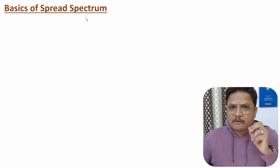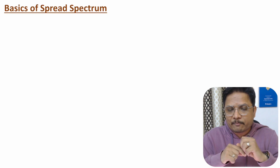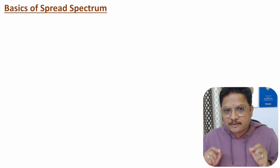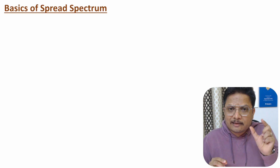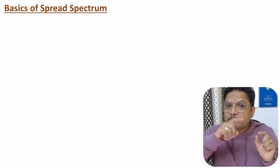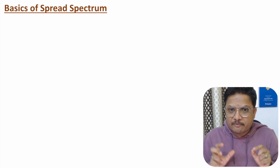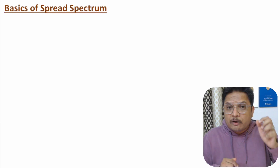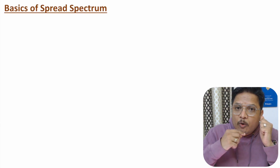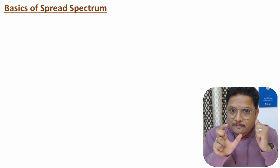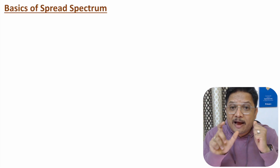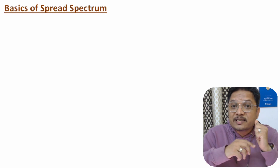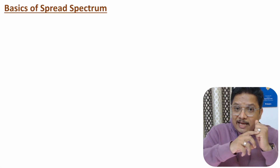Let us start with basics of spread spectrum. Using spread spectrum, what we do is increase the bandwidth of the message signal. Consider a message signal having narrow bandwidth — after spread spectrum we will have wider bandwidth. For example, take a voice call: voice has a bandwidth of around 3 to 4 kilohertz.